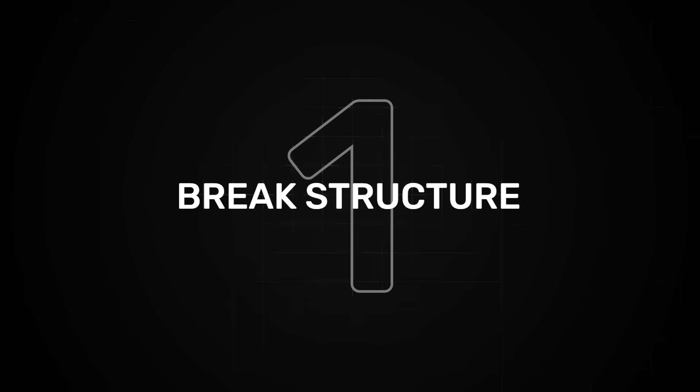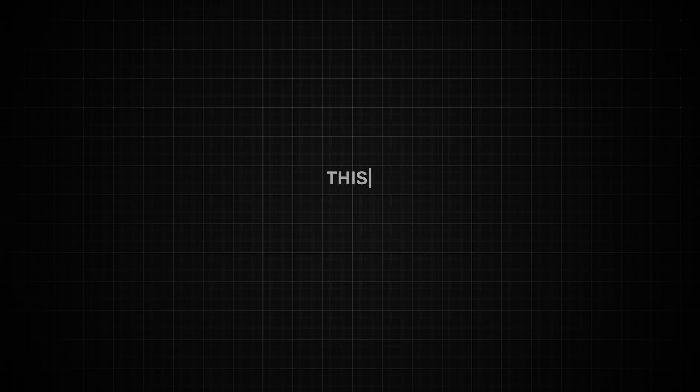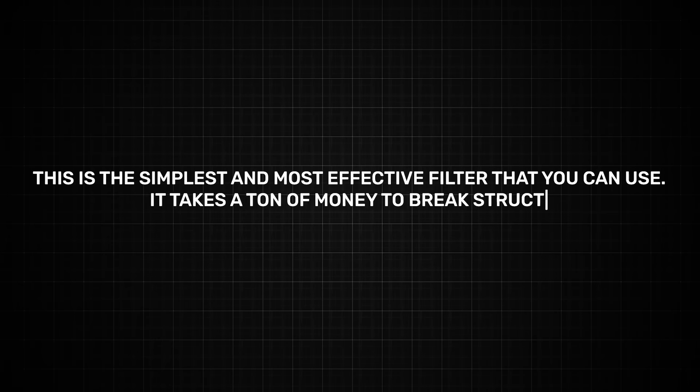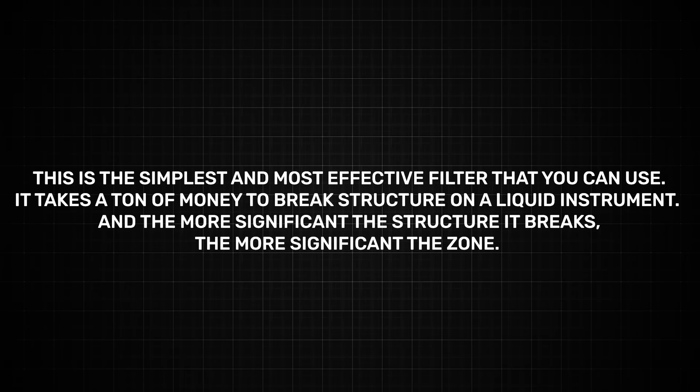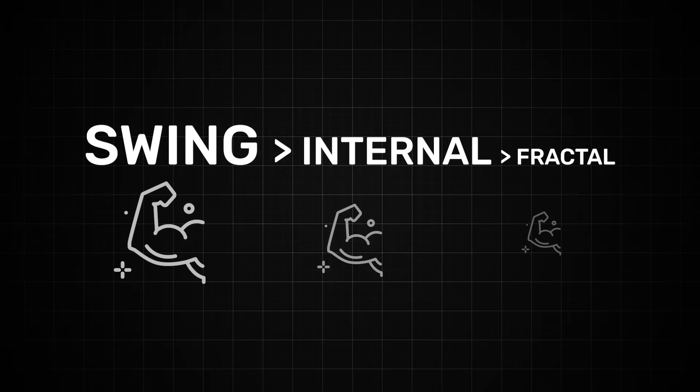There are eight key areas for us to focus on and the first is whether the zone led to a break of structure. This is the simplest and most effective filter that you can use. It takes a ton of money to break structure on a liquid instrument and the more significant that the structure breaks the more significant the zone. Swing structure is stronger than internal which is stronger than fractal. So zones that cause a break of swing structure they're going to be the most likely ones to cause the next break of swing structure.